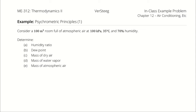Consider a 100 cubic meter room full of atmospheric air at 100 kilopascals, 35 degrees Celsius, and 70% humidity. I want to know the humidity ratio, the dew point, the mass of dry air, the water vapor, and the combined atmospheric air.